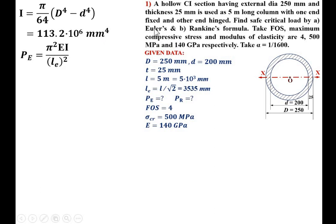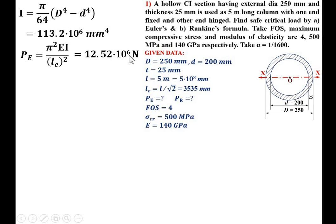Applying Euler's formula: P_E = π²EI / L_E². Here E = 140 GPa; converting to N/mm², E = 140 × 10³ MPa. I = 113.2 × 10⁶ mm⁴ (no conversion needed). Effective length L_E = 3535 mm. Substituting all values gives P_E = 12.52 × 10⁶ N.